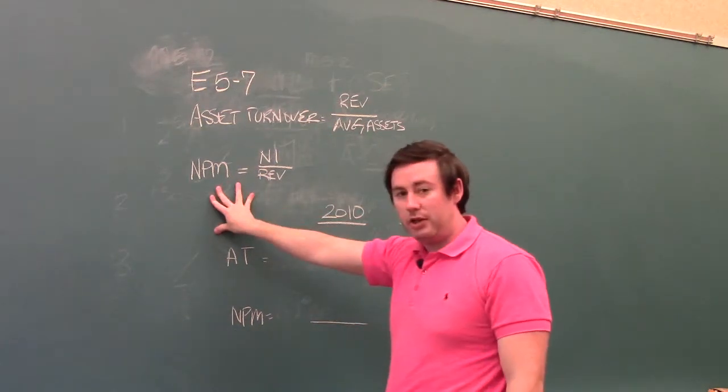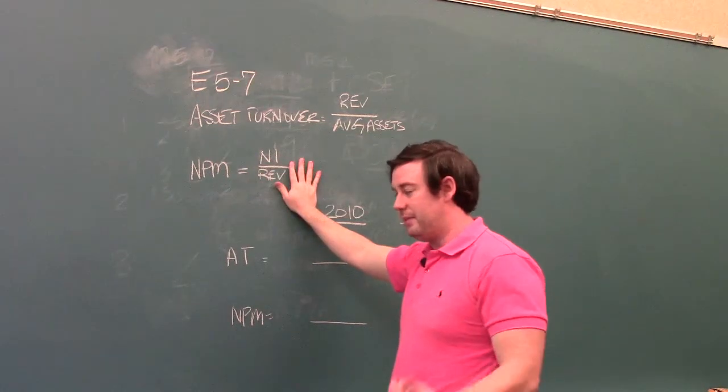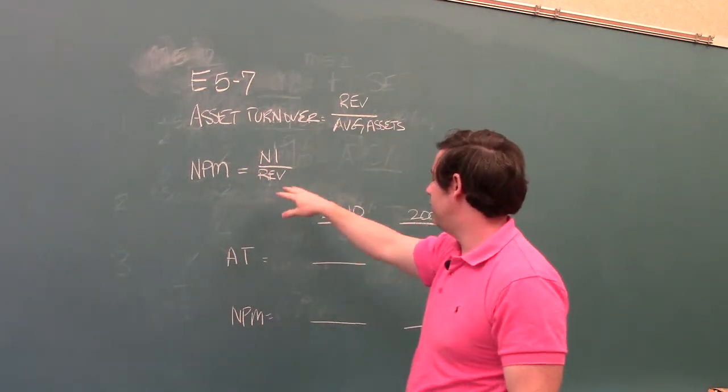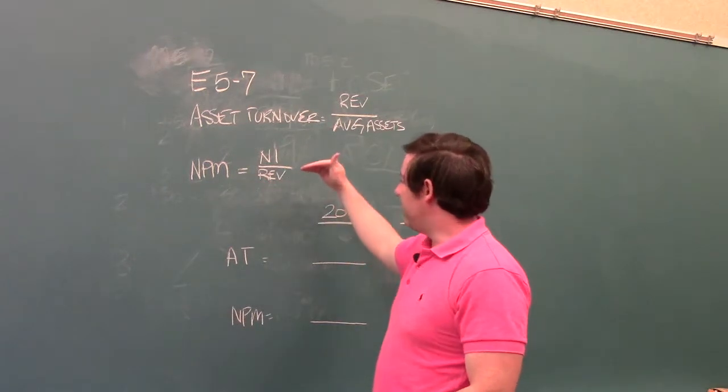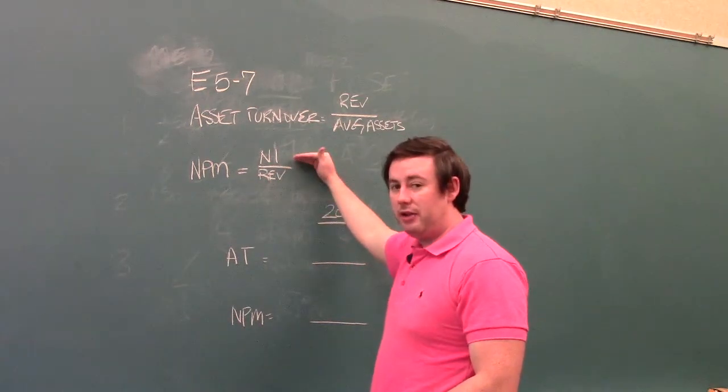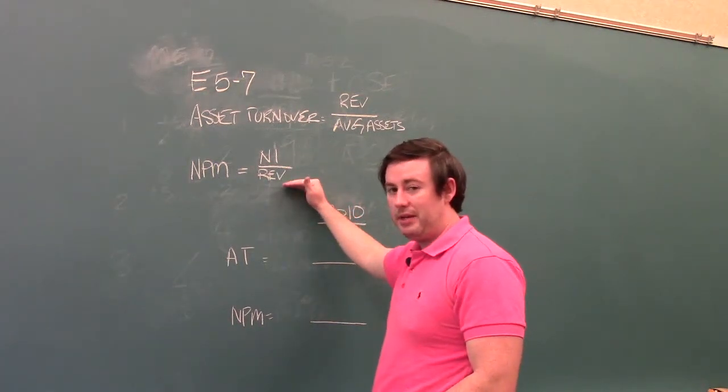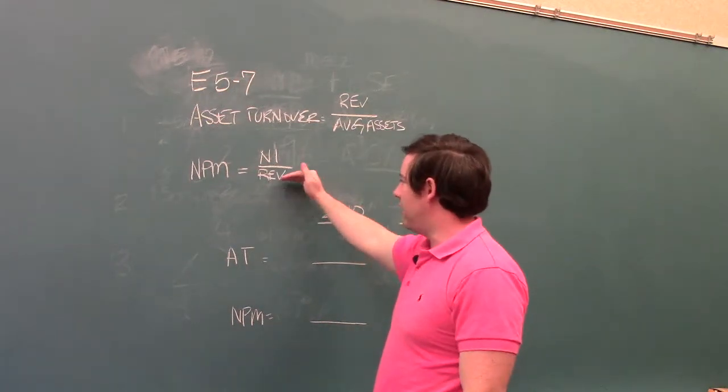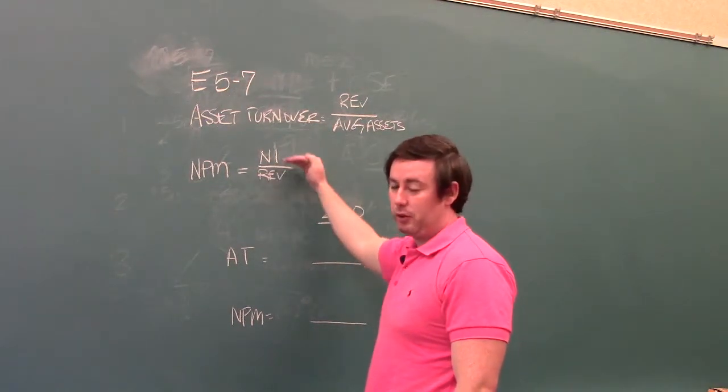For the net profit margin ratio, we've had a problem on this in previous homework for the first section of Chapter 5. It's taking how many dollars of net income do we get based upon how many dollars of revenue that we make. Don't forget that this indicates how well a company controls its expenses.